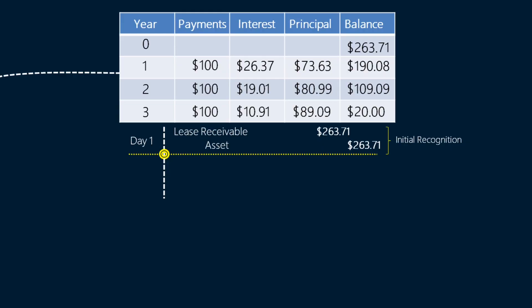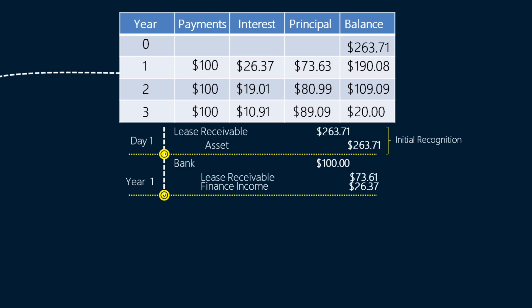Back to our entries. At the end of the first year, we receive $100 from the lessee, so we debit our bank account by that amount. $26.37 is our interest income for the first year, so we credit finance income by that amount. The remaining amount, $73.63, will reduce our debit balance in the receivables account, so we credit that account.